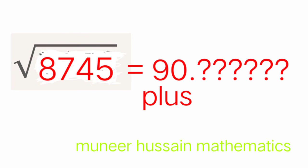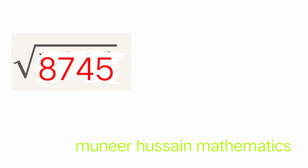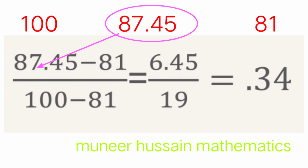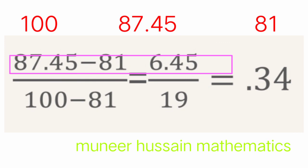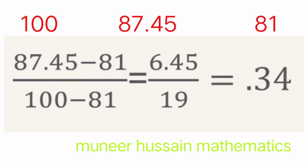To find the decimal part, we use the formula: take 87.45 minus the lesser perfect square (81), divided by the difference between the two surrounding perfect squares (100 − 81 = 19). So we calculate (87.45 − 81) / (100 − 81) = 6.45 / 19.